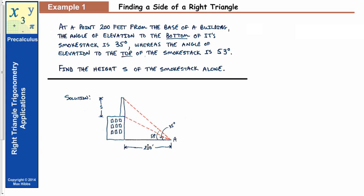We actually have three different triangles here: a small right triangle, a large right triangle where the line to the top is the hypotenuse, and a third triangle that is not a right triangle because there are no 90-degree angles in it. We'll focus on the two right triangles — the small and the large one — and ignore the non-right triangle for now, since we're only working with right triangle trigonometry.